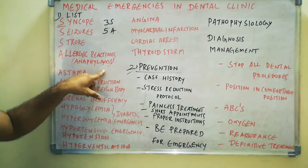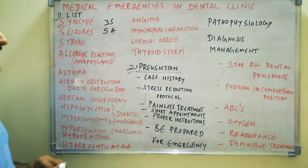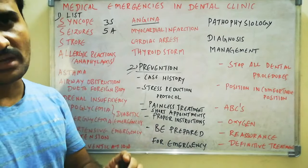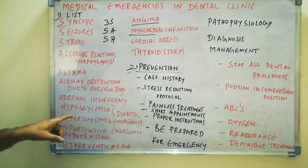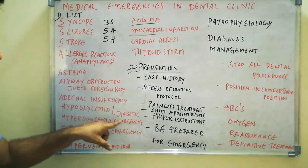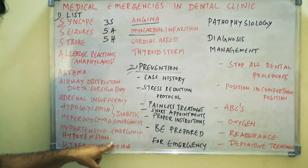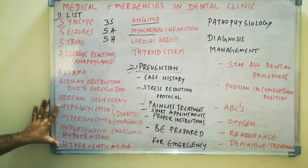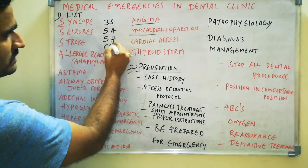After that you have 5A: allergic reactions or anaphylaxis, asthma, airway obstruction due to foreign body, adrenal insufficiency, and angina pectoris. When you write angina pectoris, you also have to write about myocardial infarction because both are related to chest pain. Then 5H: hypoglycemia, hyperglycemia — related to diabetic emergencies — hypertensive emergency, hypotension related to BP, and hyperventilation.